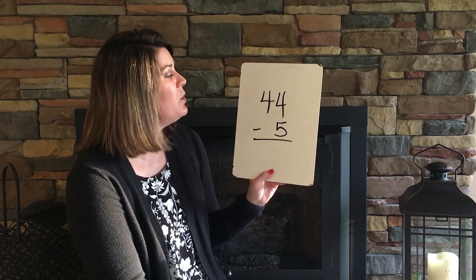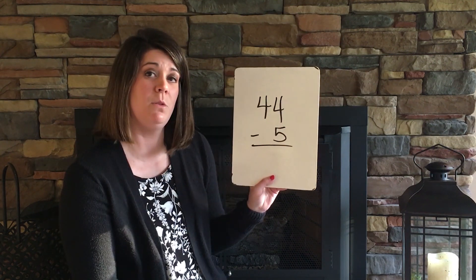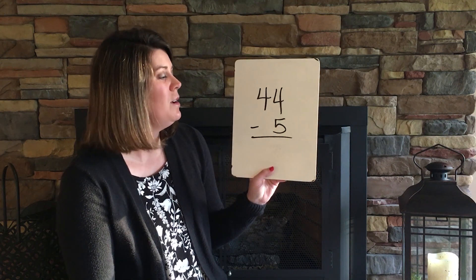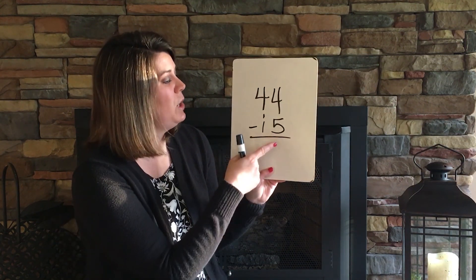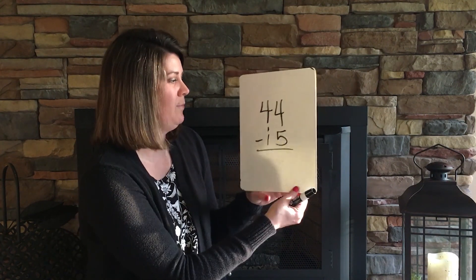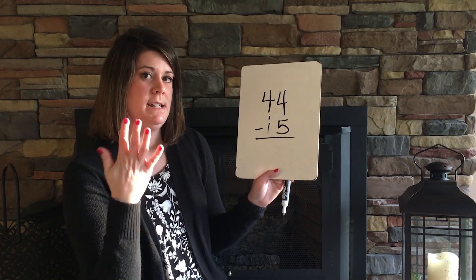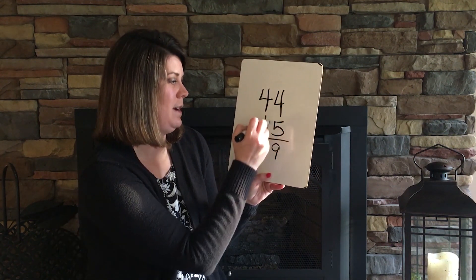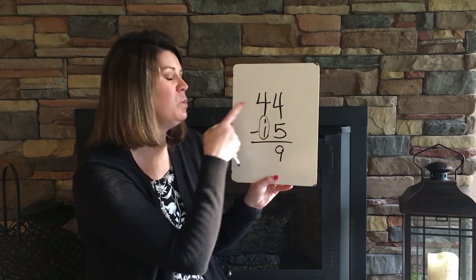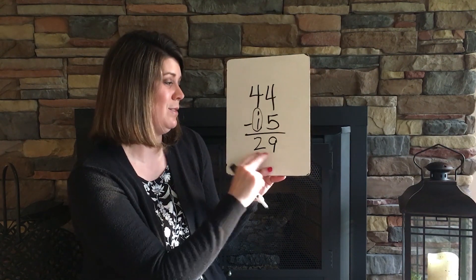For 44 minus 15, I ask what plus 5 gives me 4? I can't do that, so I make this 14. What plus 5 gives me 14? Counting: 5, 6, 7, 8, 9, 10, 11, 12, 13, 14 — that's 9. Then 2 plus what gives me 4? The answer is 2, for a final answer of 29. I hope these strategies have been helpful. All of them will give you the correct answer — you've got to decide which one works best for you. Thanks, Ms. McGrady.